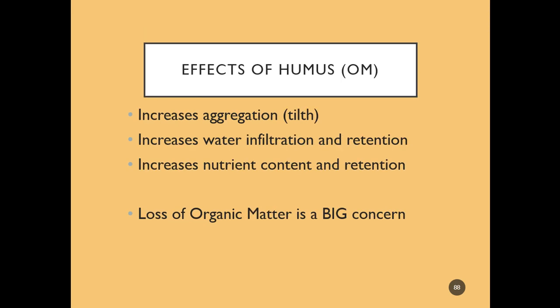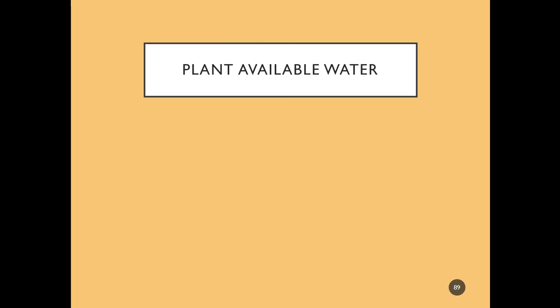The effects of humus or organic matter on soil structure include increased aggregation, which increases water infiltration and retention, and also increases nutrient content and retention. The loss of organic matter is a big concern in soil management — whether in agriculture, where it must be maintained through good practices, or in an urban setting where topsoil is removed and not enough is put back on site for plant and tree growth.